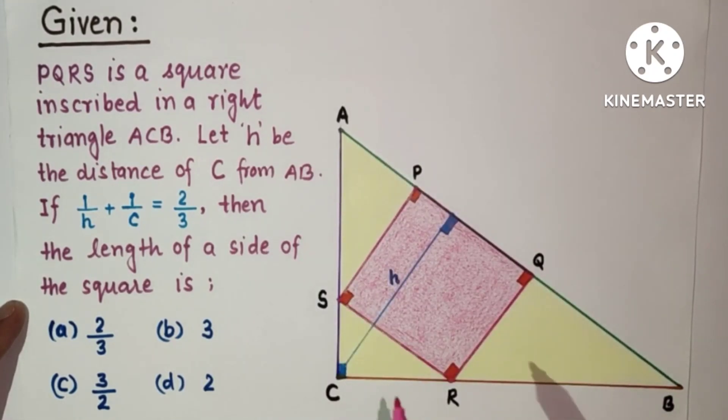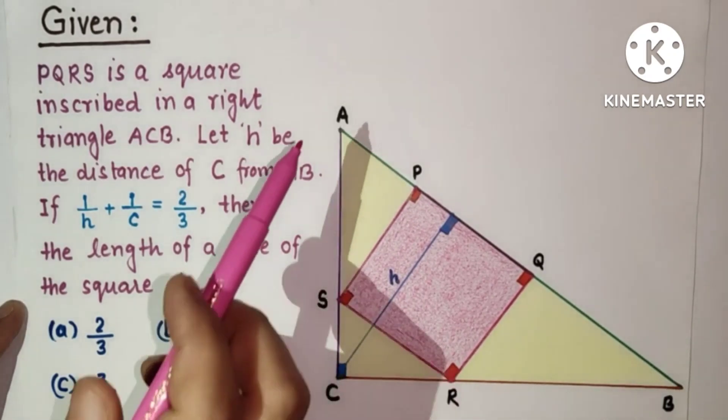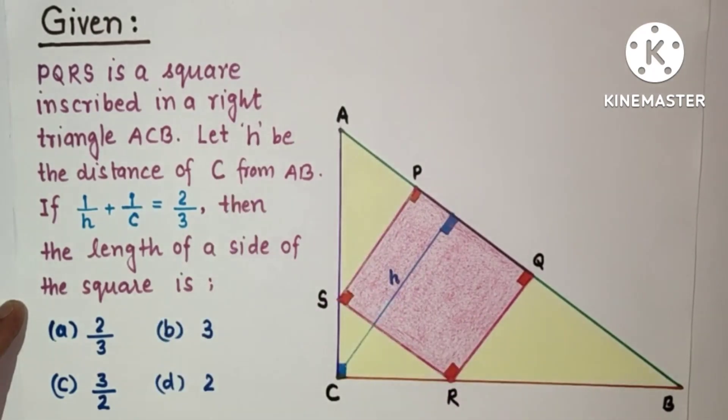The distance of hypotenuse AB from C is given as h, and we are given a relation between h and c: 1/h + 1/c = 2/3.